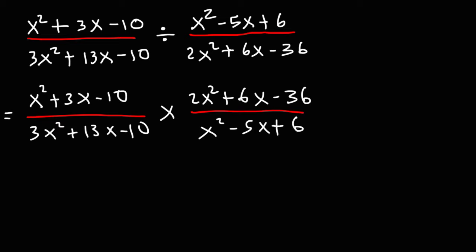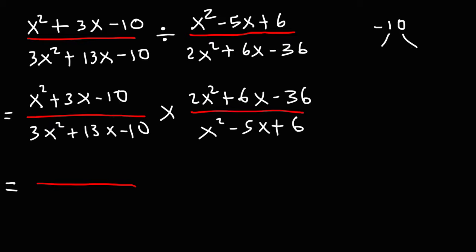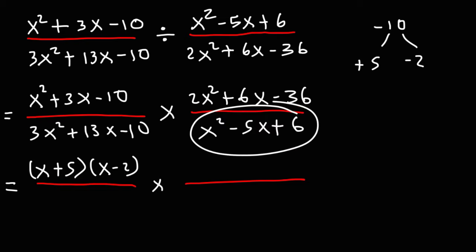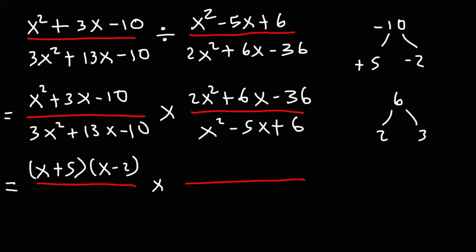Let's begin by factoring x squared plus 3x minus 10. We need two numbers that multiply to negative 10 but add to positive 3. We know 5 times 2 is 10, so we use positive 5 and negative 2 because they add up to positive 3. So this factors as x plus 5 times x minus 2. Now let's factor the other trinomial. We need two numbers that multiply to 6 but add to negative 5. That's negative 2 and negative 3. So this factors as x minus 2 times x minus 3.